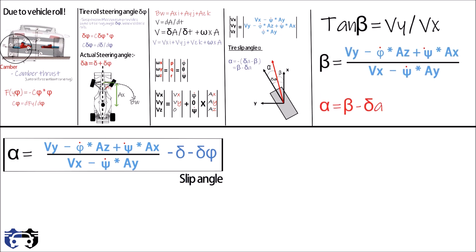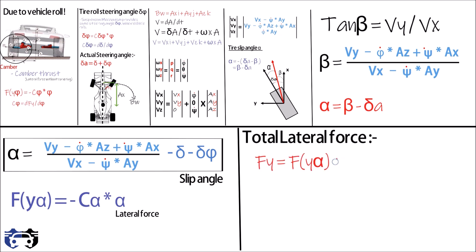The lateral force is given by Fy_alpha equals minus C_alpha multiplied by alpha, where C_alpha is the cornering stiffness. So from here the total value of lateral force is given by Fy equals Fy_alpha plus Fy_phi. Here on putting the values of alpha we can get the value of lateral force.